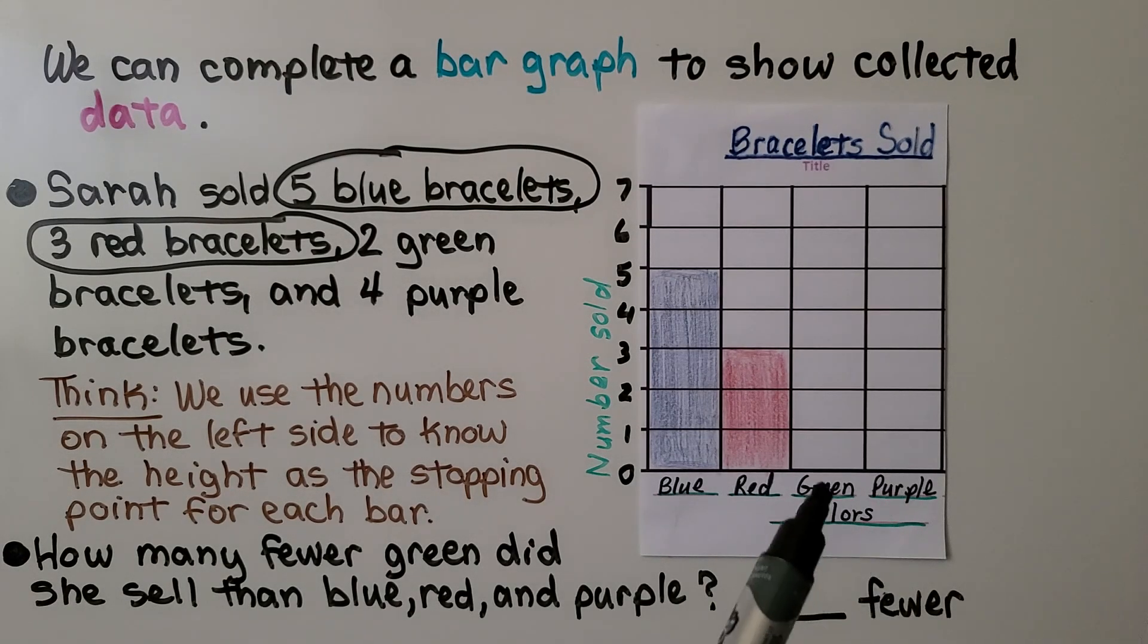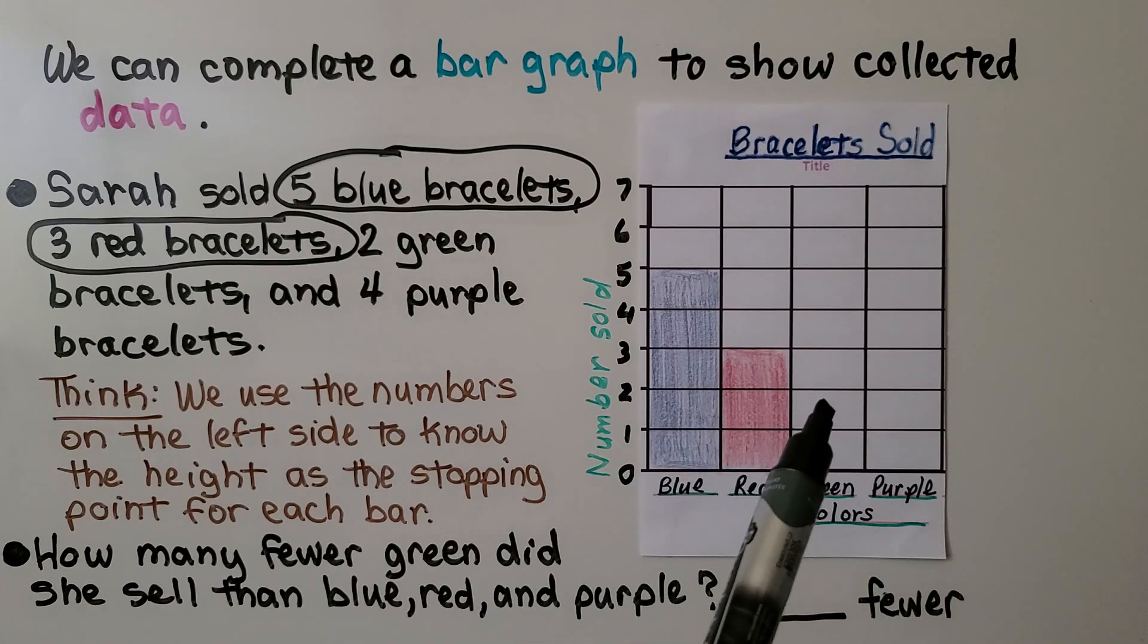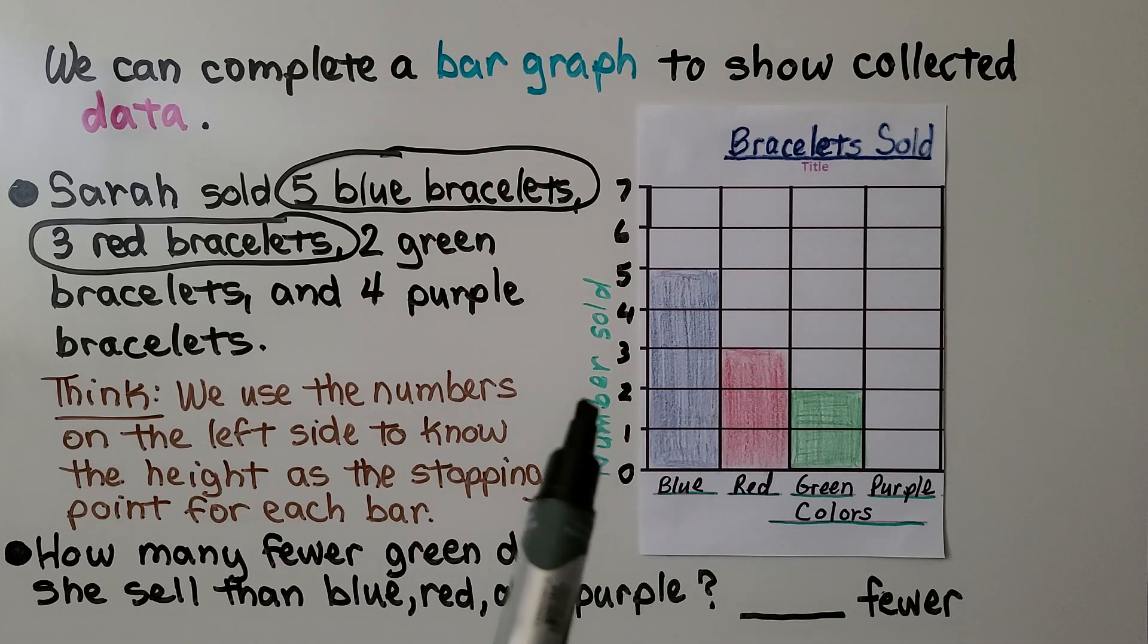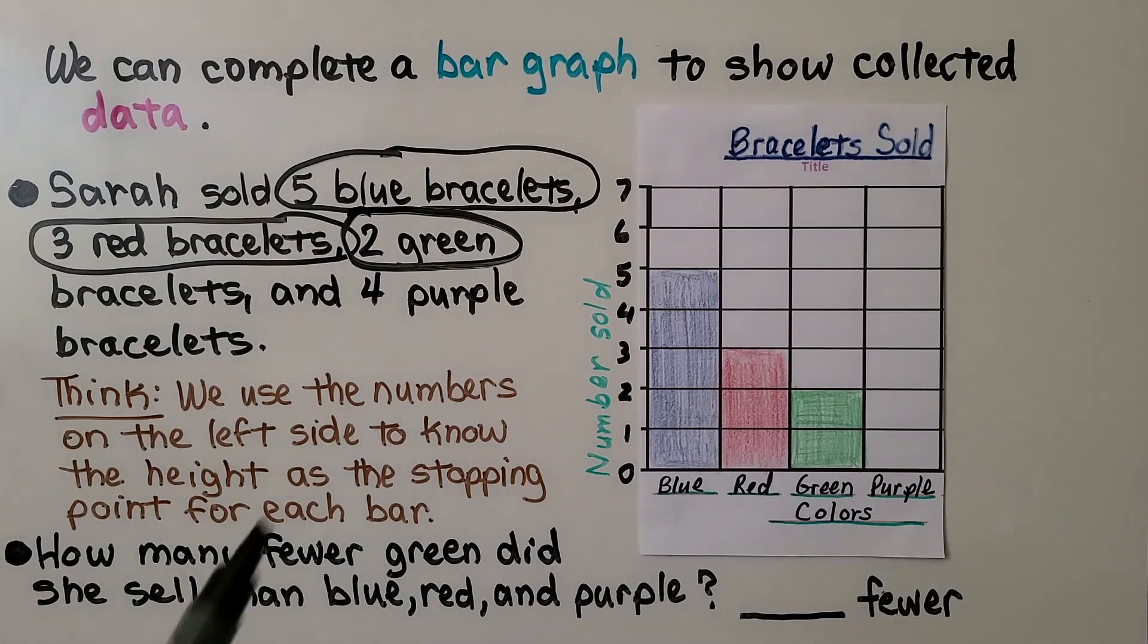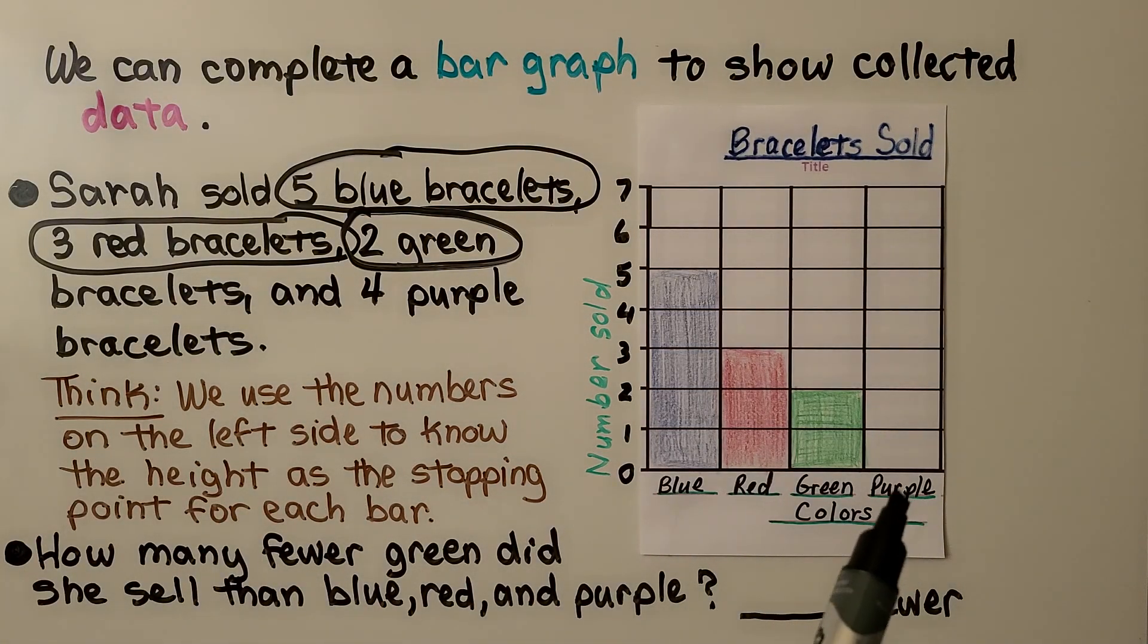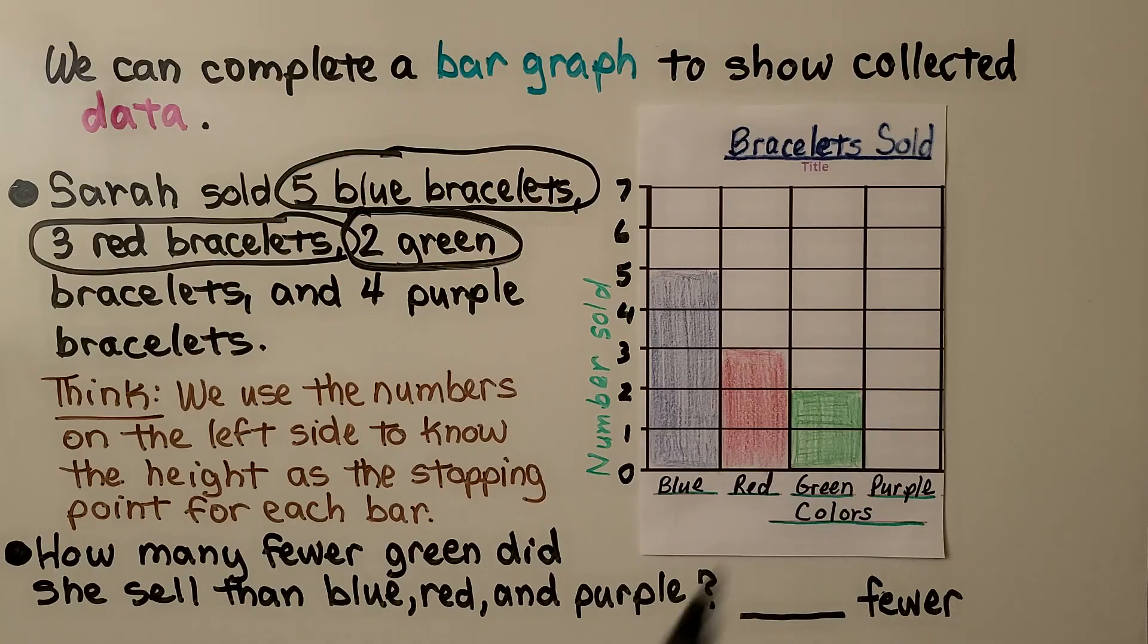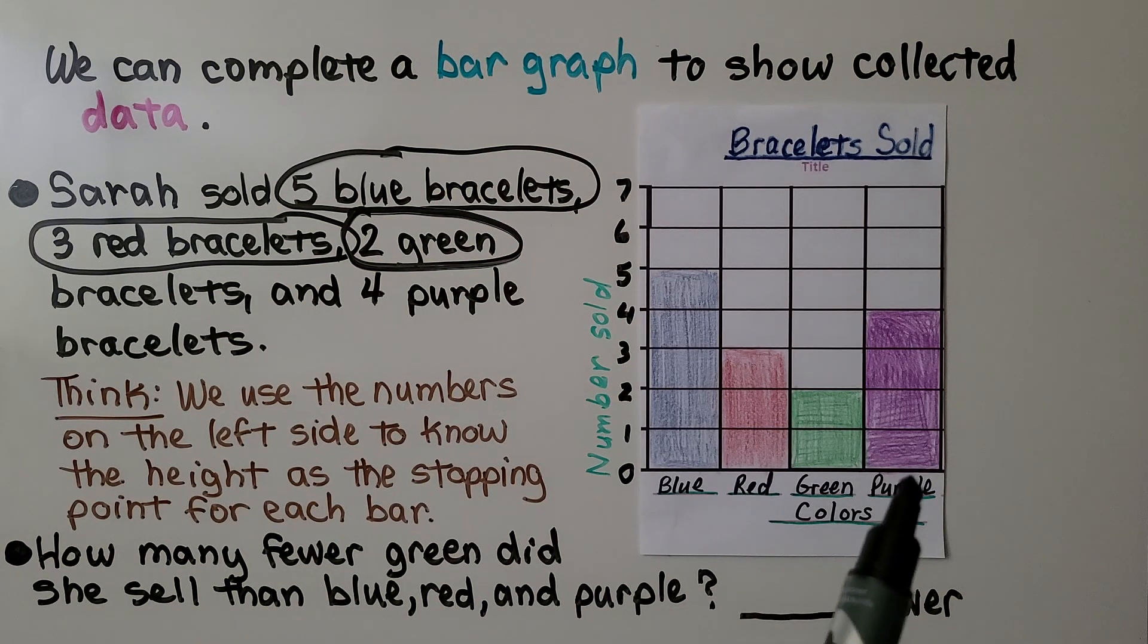For the two green ones, we're going to draw a bar that stops at the two on the scale. That's two green bracelets. Now we need to do four purple bracelets. For purple, we're going to draw our bar so that it goes to the line on the scale for four. This shows four purple bracelets.